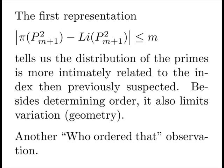The first representation tells us that the distribution of primes is more intimately related to the index than previously suspected. Besides determining the order, which is all it did until now, it also limits variation or geometry. Another who ordered that observation.